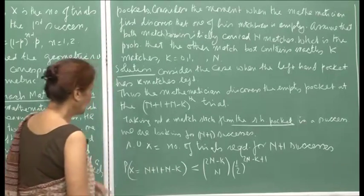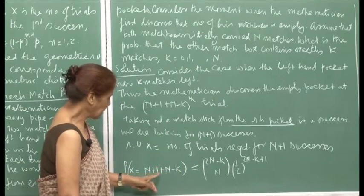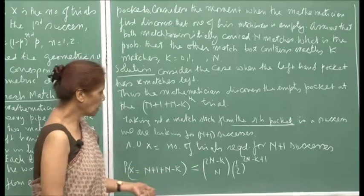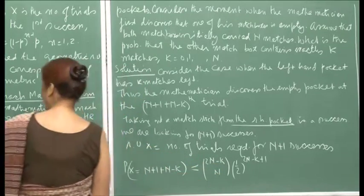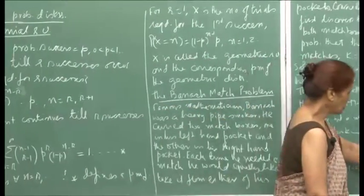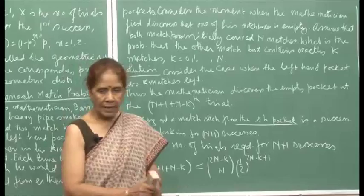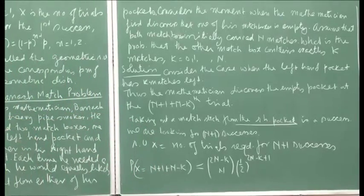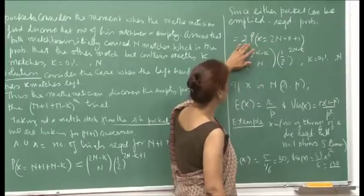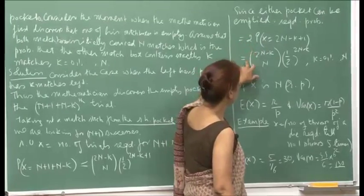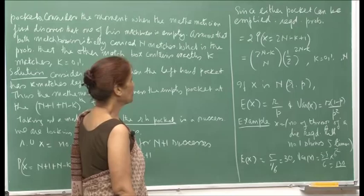Since either of the pockets could have emptied first, the required probability is twice that. When you multiply by 2, the required probability is 2N minus k choose N times (1/2) to the 2N minus k.